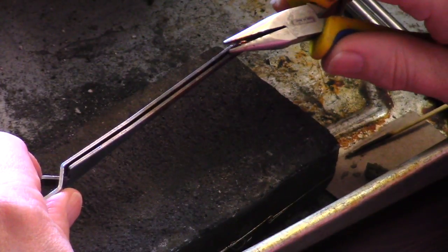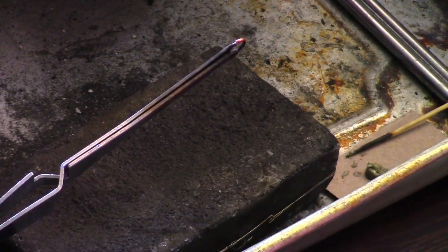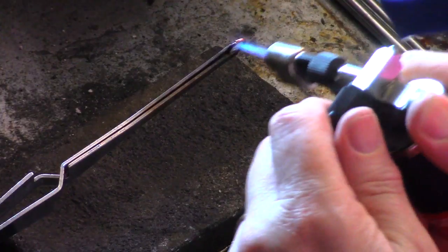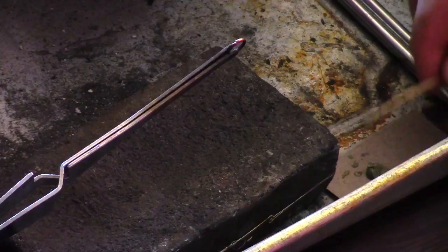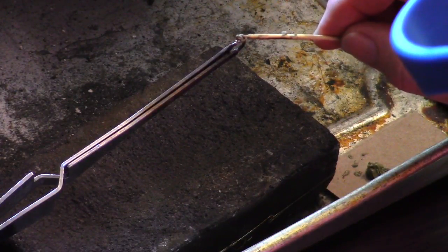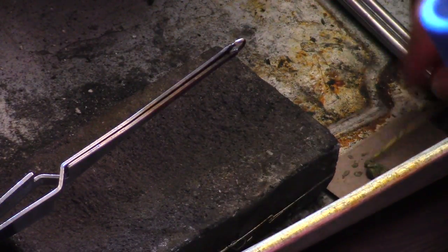So just using my third hand, I place this jump ring inside and then heat it up a little bit. You don't necessarily have to do that, but I like it because it lets the solder paste cling a little bit better to the metal. So just adding a bit of easy solder.